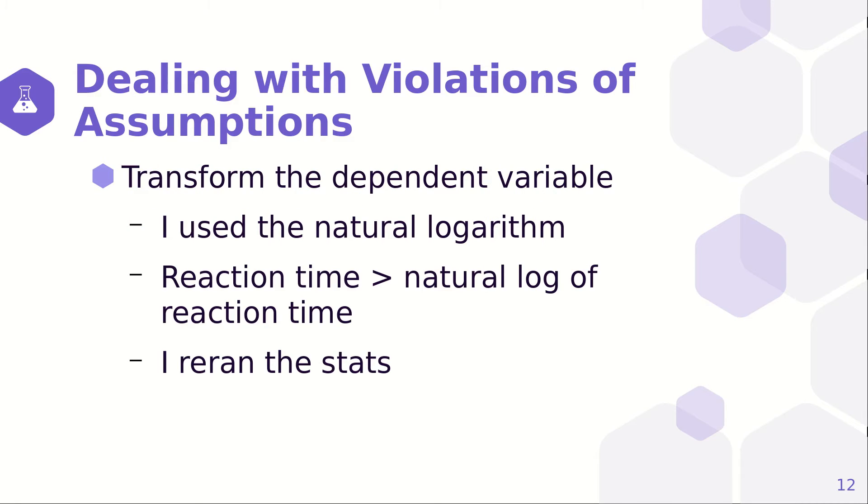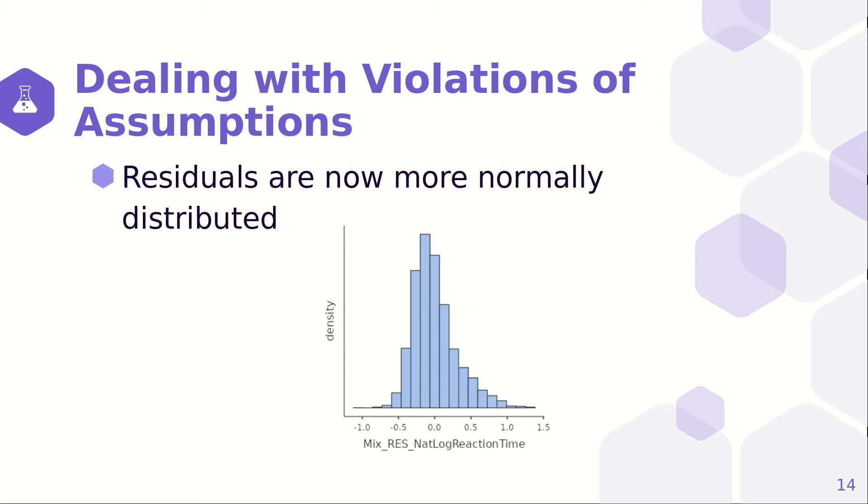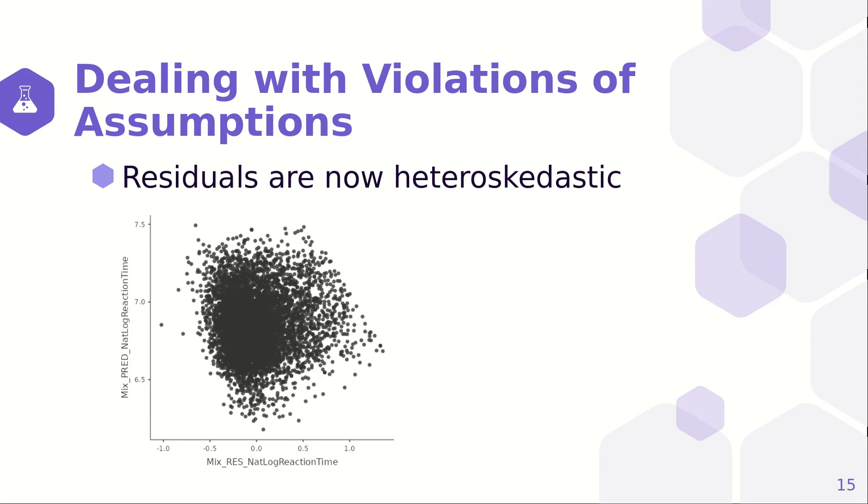One way to deal with violations of assumptions, especially violations dealing with reaction times, is to transform the reaction time. I used a natural logarithm and I converted the reaction times into the natural log of reaction time and reran the stats. The same variables turned out significant. And the residuals are now more normally distributed and are heteroscedastic. So, now we've been sure that the assumptions have been met.